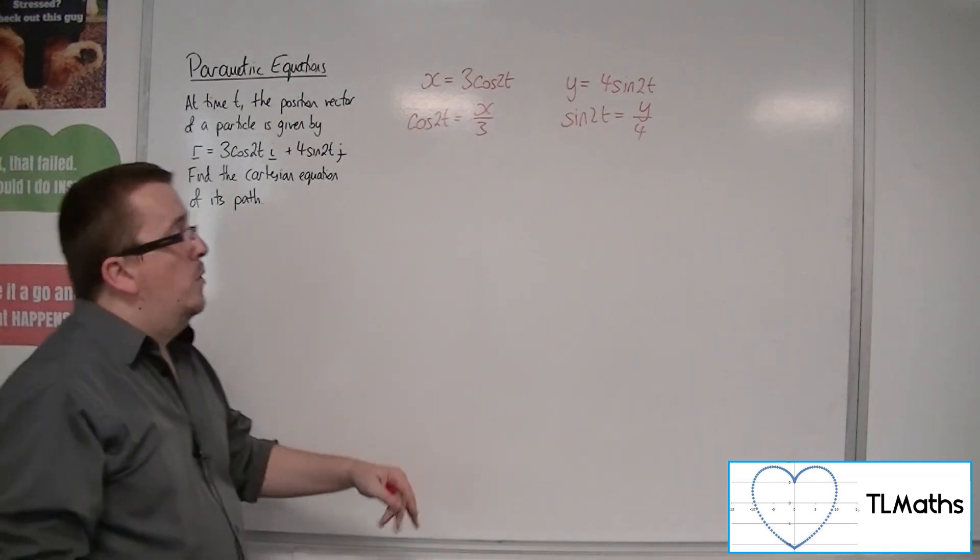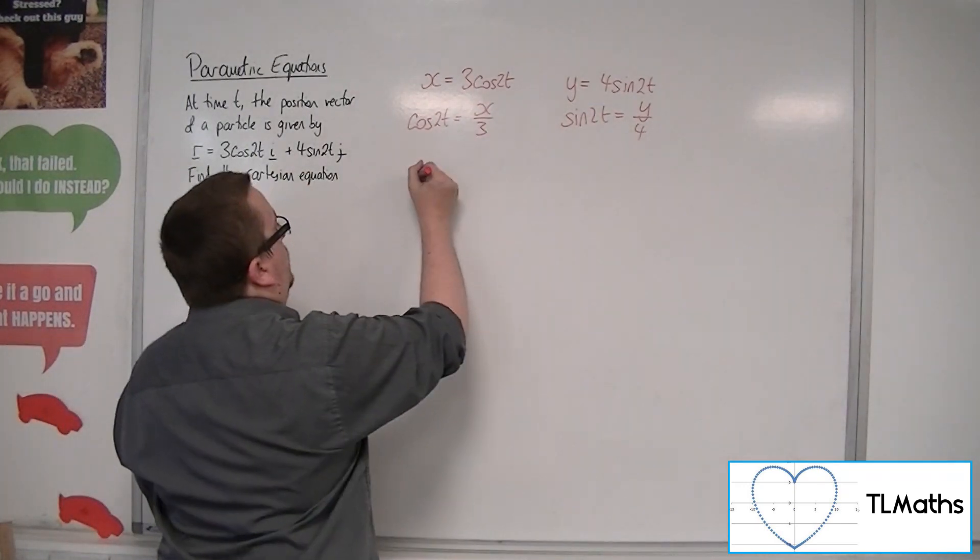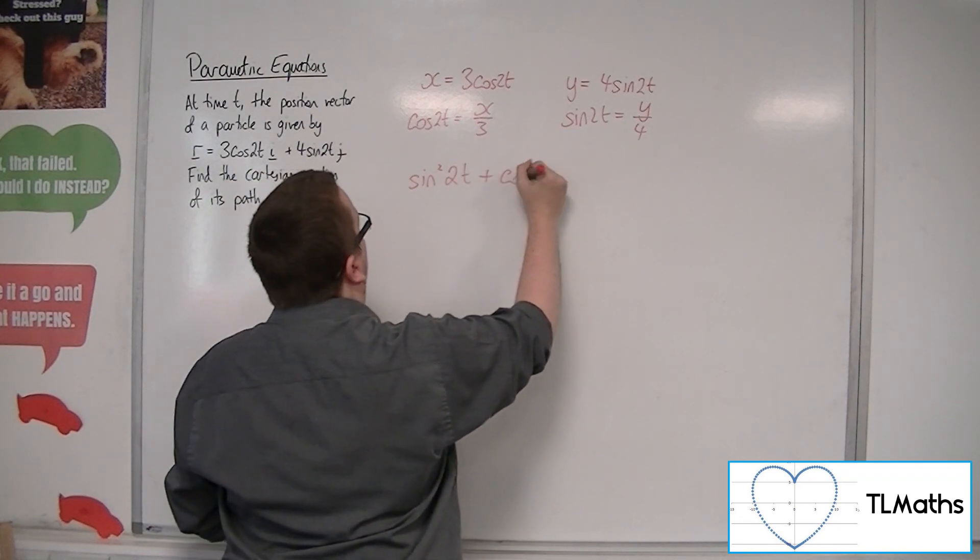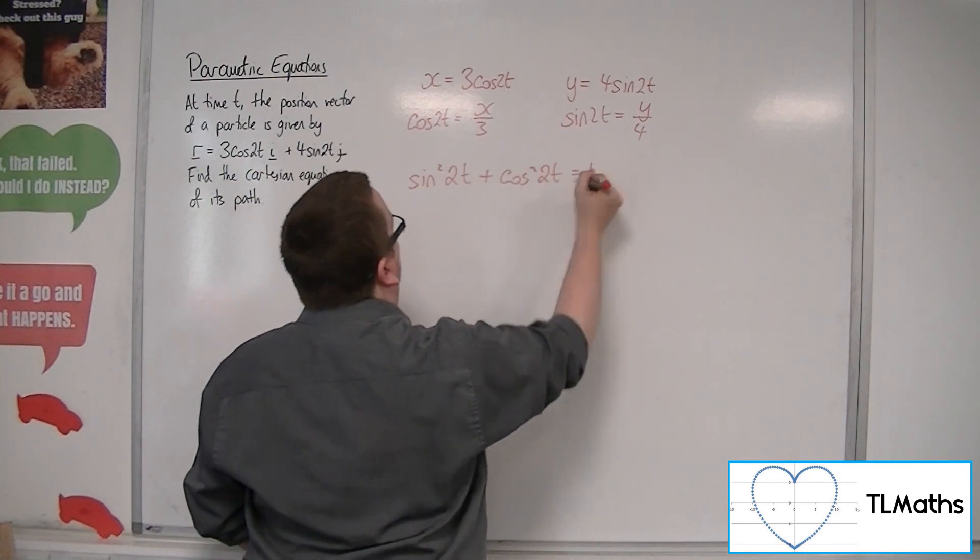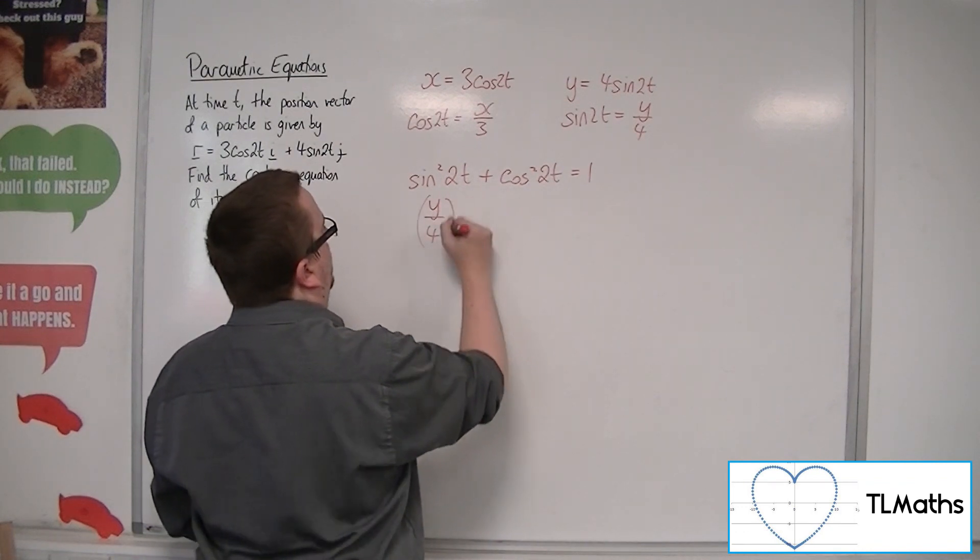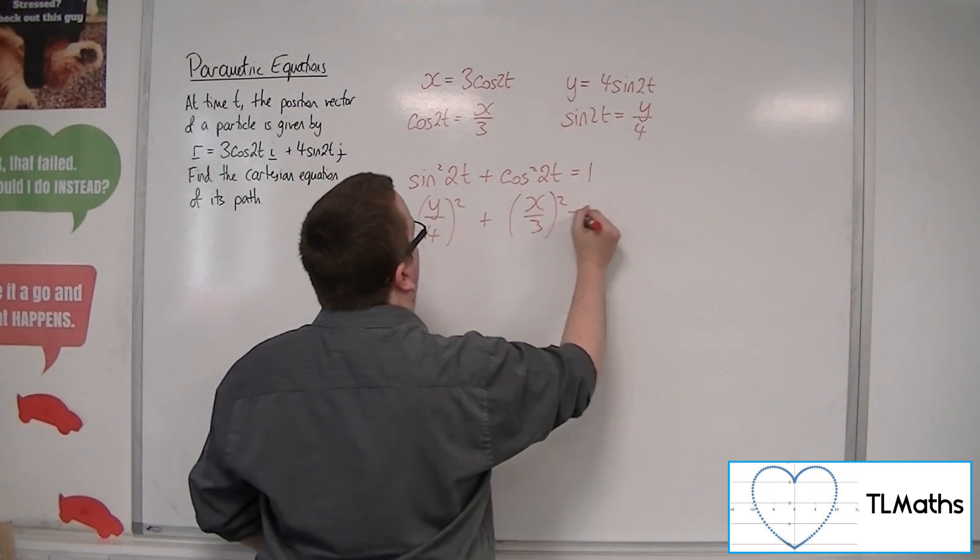Then we know that sine squared plus cos squared is 1. So also sine squared 2t plus cos squared 2t is equal to 1. So we have y over 4 squared plus x over 3 squared equals 1.